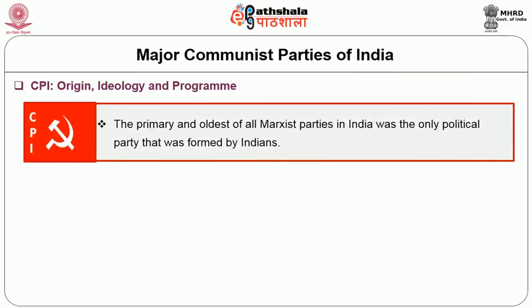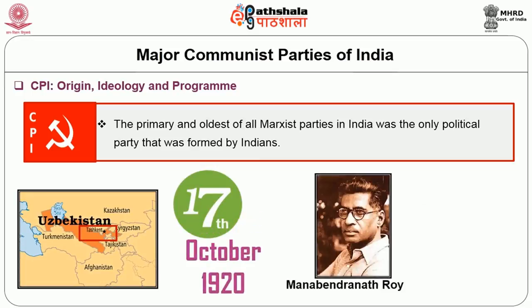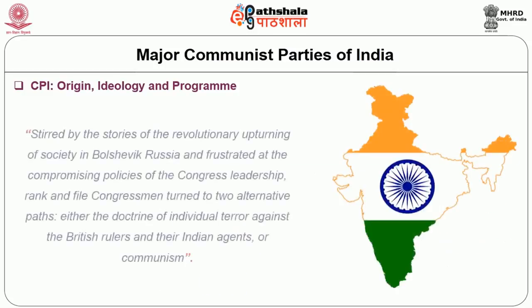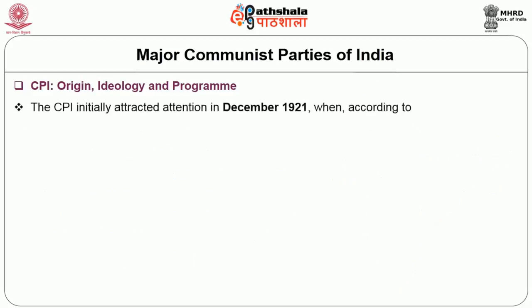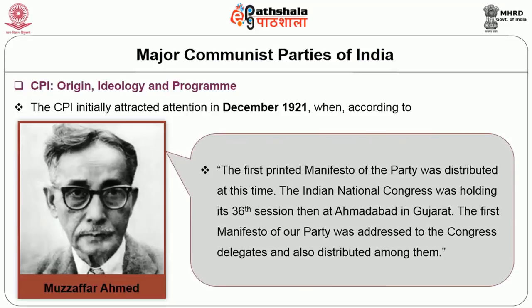The Communist Party of India, the primary and oldest of all Marxist parties in India, was the only political party formed by Indians but outside India — at Tashkent on 17 October 1920 — with a leading role played by Manabendra Nath Roy, to put forward the cause of independence of India. Back home in India, stirred by stories of the revolutionary upturning of society in Bolshevik Russia and frustrated at the compromising policies of the Congress leadership, rank-and-file congressmen turned to two alternative paths: either the doctrine of individual terror against the British rulers, or joining the communists. The CPI initially attracted attention in December 1921 when the first printed manifesto of the party was distributed at the Indian National Congress' 36th session in Ahmedabad in Gujarat.